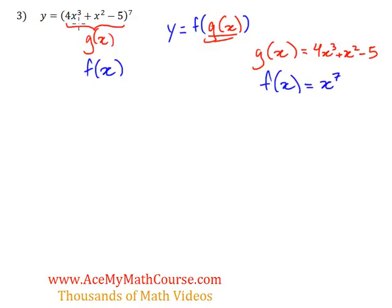That way, f(g(x)) will be what we have there: (4x³ + x² - 5) to the power of 7. Because for f(g(x)), we're just replacing this x for all of g, which is 4x³ + x² - 5.